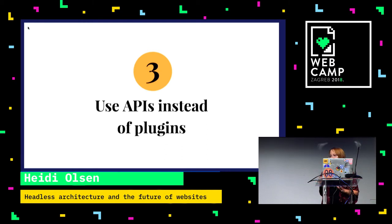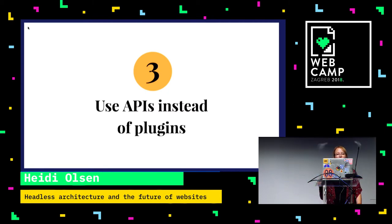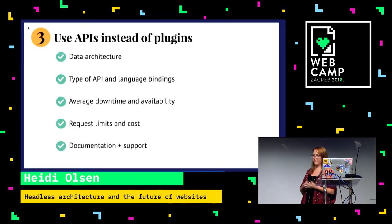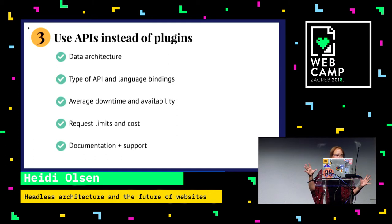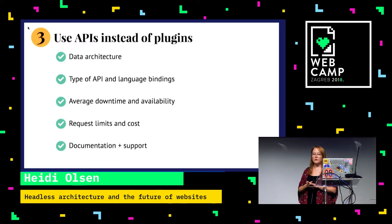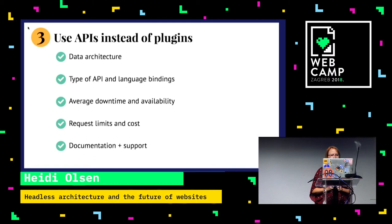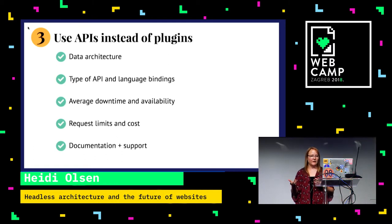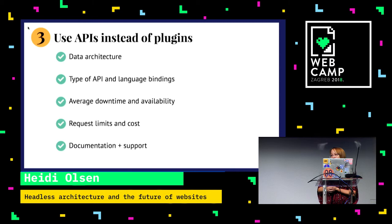Third: use APIs instead of plugins. It might be tempting to use some integration that comes out of the box, but you don't need to do the plugin thing anymore. You don't want to get locked into vendor relationships — you want the flexibility you've worked so hard for. When vetting APIs, check data architecture to ensure they have all the fields you need, what type of API it is (REST, SOAP), whether they have language bindings for JavaScript or whatever you code in, their average downtime and availability, request limits and cost, and documentation and support. Check their forums — if people are angry, just don't bother with that API.